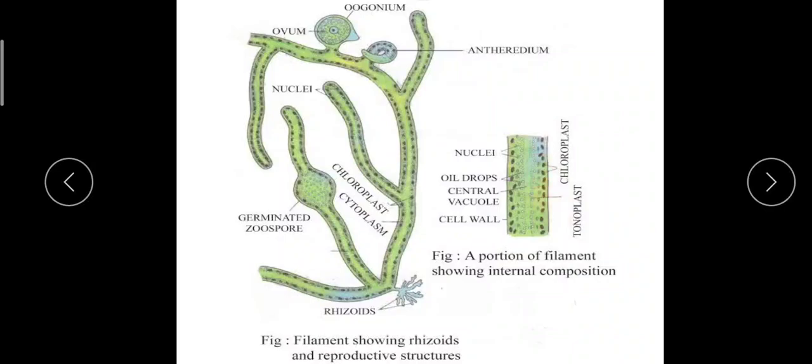The nuclei occupy the inner region and the chloroplasts or chromatophores are found towards the peripheral region. The common chlorophylls found in this yellow-green algae are chlorophyll a and chlorophyll e. Carotenoids are found in excessive amounts; the common carotenoids are beta-carotene and xanthophylls.